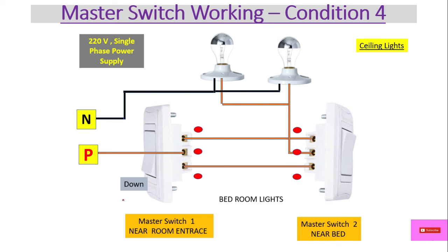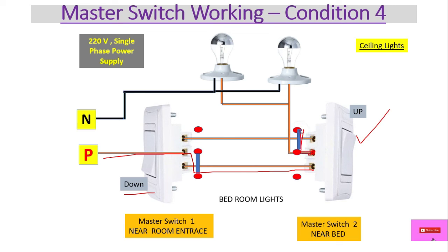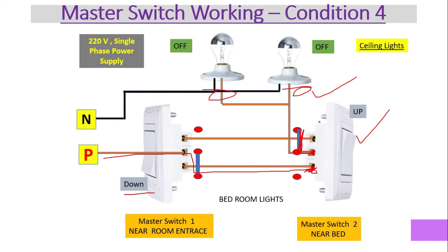Condition four: the first switch is in the down position and the second switch is in the up position. Power comes through the lower contact of the first switch, but the second switch's up position connects its common point to the upper terminal where no power is present. At this condition also, both lights will be off.